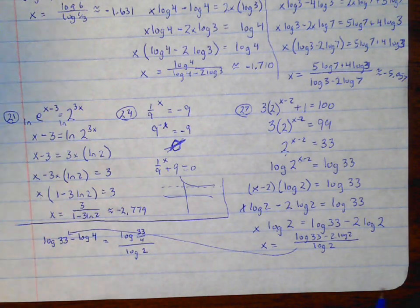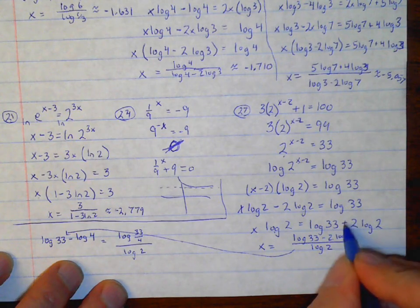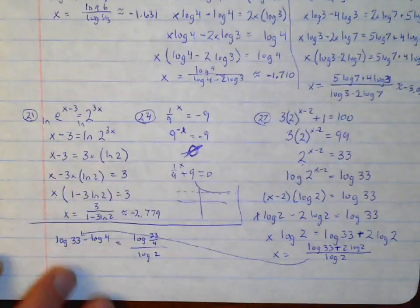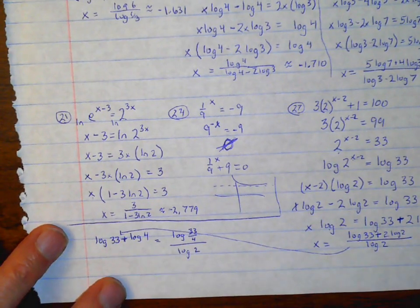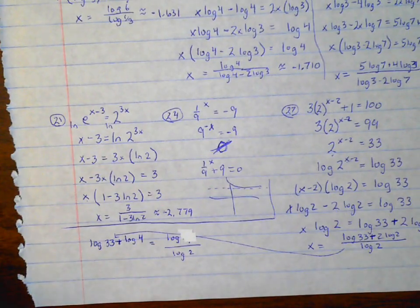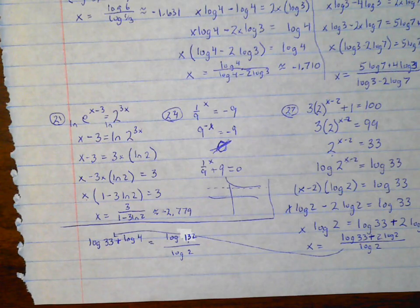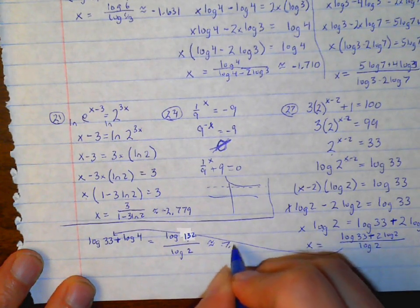Looking at this, I made a mistake. This is a minus 2, so I need to add that over — it's going to be a plus. When we add logs, that's like multiplying, so 33 times 4 is log of 132 over log of 2, which in Desmos gives you about 7.044.